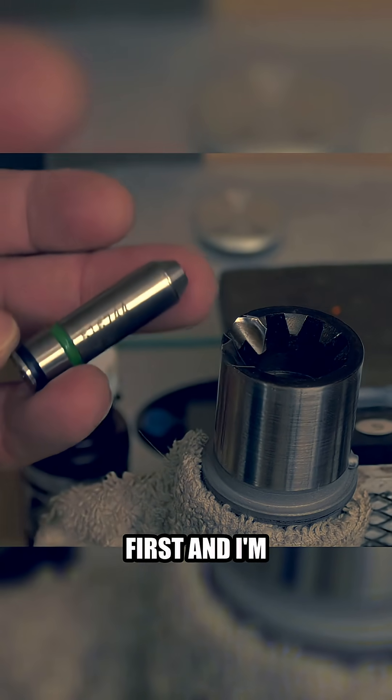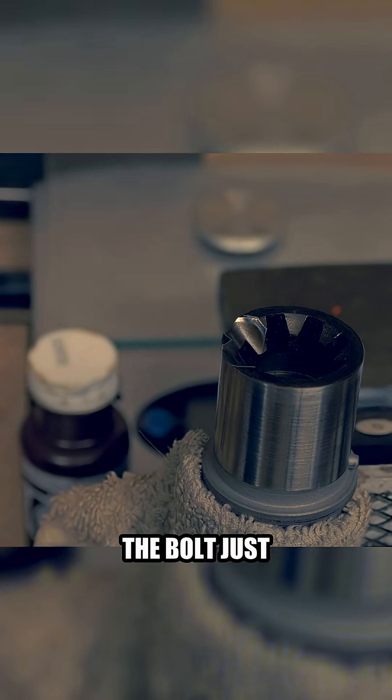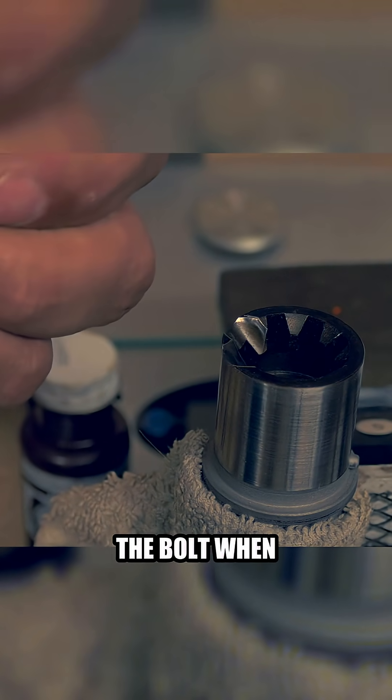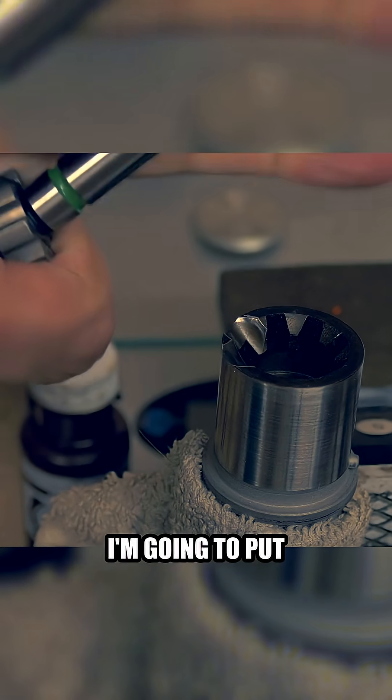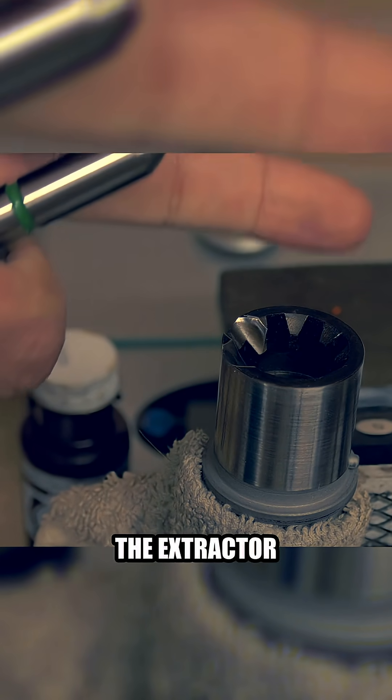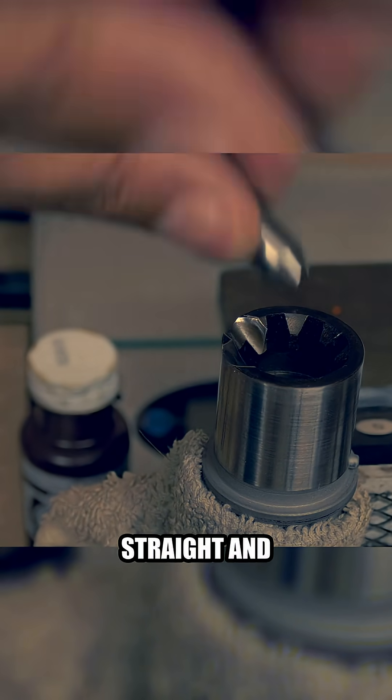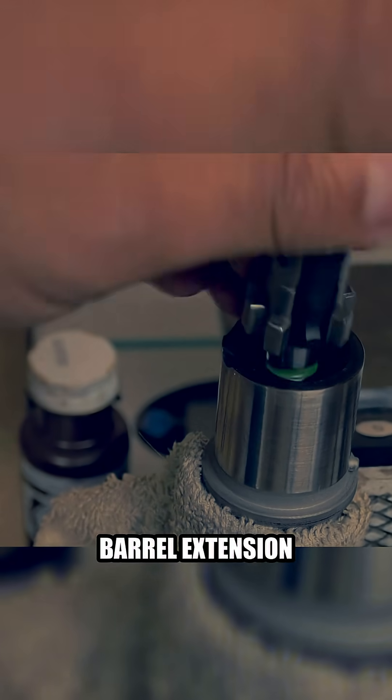I'm going to take the go gauge first and I'm going to put it in the bolt just like a round would be sitting in the bolt when it's chambered and extracted. I'm going to put the rim underneath the extractor, then push to get it straight, and then put it into the barrel extension and chamber.